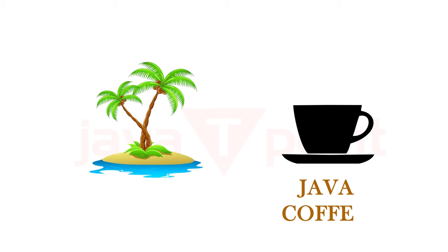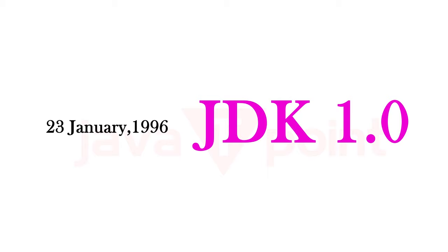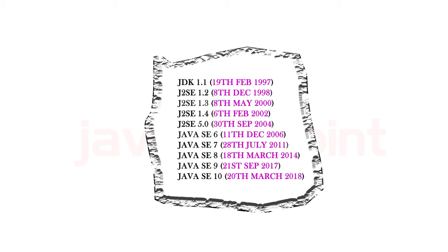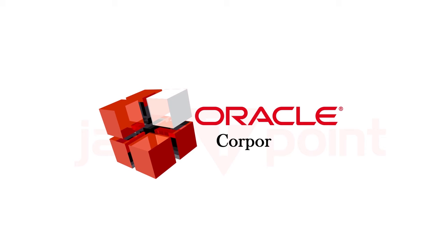Java is an island of Indonesia where the first coffee was produced, called Java coffee. On the 23rd of January 1996, JDK 1.0 was released. These are other versions of Java released in the consequent years. It is now a subsidiary of Oracle Corporation.